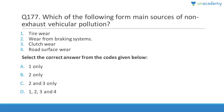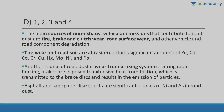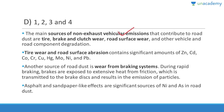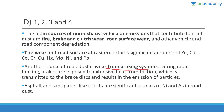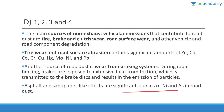Main sources of non-exhaust vehicular pollution include tire wear, braking systems, clutch wear, and road surface wear. These release significant amounts of zinc, cadmium, cobalt, chromium, copper, mercury, molybdenum, nickel, and lead. Rapid braking exposes brake systems to extensive heat from friction, resulting in emission of particles. Asphalt wear is also a significant source of nickel and arsenic in road dust.